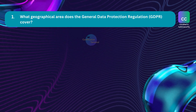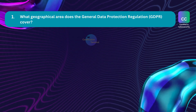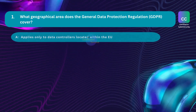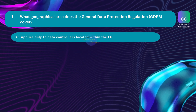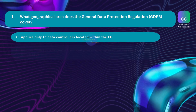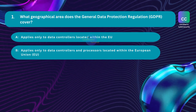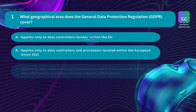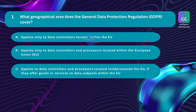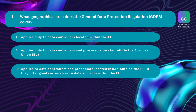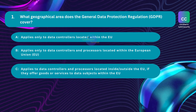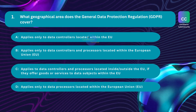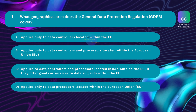Question number 1. What geographical area does the General Data Protection Regulation cover? Option A: applies only to data controllers located within the EU. Option B: applies only to data controllers and processors located within the European Union. Option C: applies to data controllers and processors located inside or outside the EU, if they offer goods or services to data subjects within the European Union.